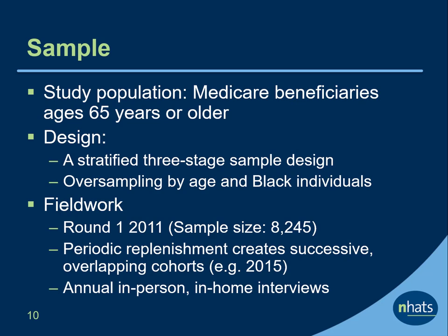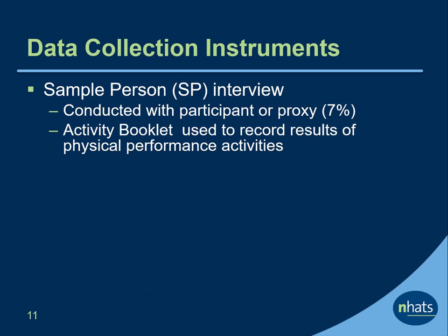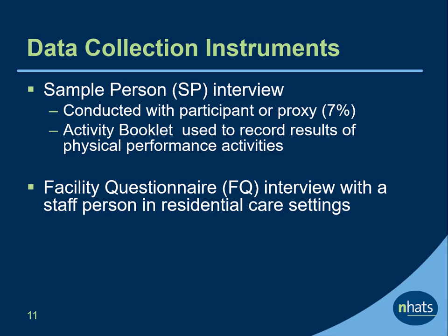NHATS interviews participants annually in their homes. The primary data collection instrument is the sample person, or SP, interview. Most sample persons respond to the SP interview for themselves. A proxy who is familiar with the sampled person's routine, typically a family member, is interviewed in instances where the sample person cannot respond on their own. As part of the SP interview, an activity booklet is used to record the results of the physical performance activities. The facilities questionnaire, or FQ, is administered to a staff person when a sample person resides in a residential care setting, including a nursing home.